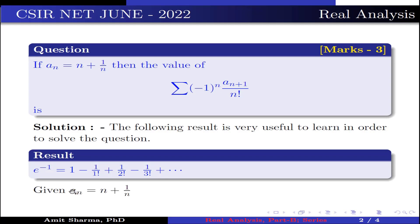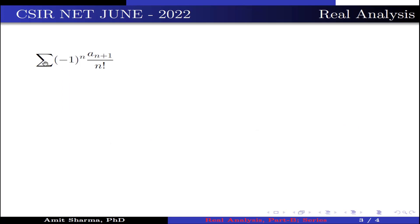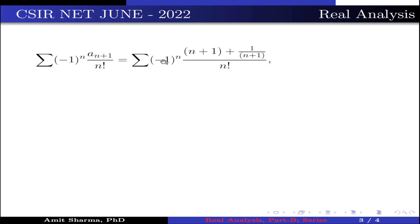Now, given a_n = (n+1)/n, this implies the value of a_{n+1} is (n+1+1)/(n+1). Now we have to find the value of (-1)^n · a_{n+1} divided by n factorial. Substituting the value of a_{n+1}, we get the summation of (-1)^n · [(n+2)/(n+1)] divided by n factorial.